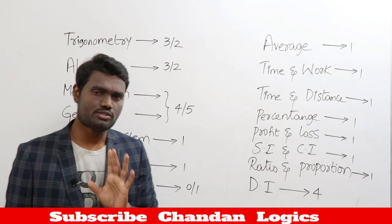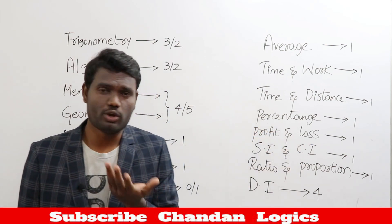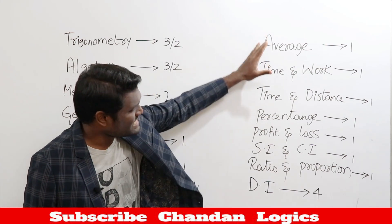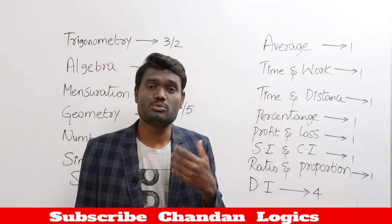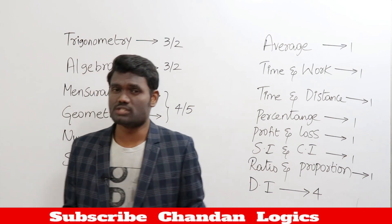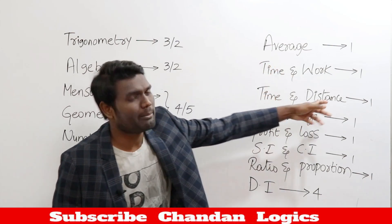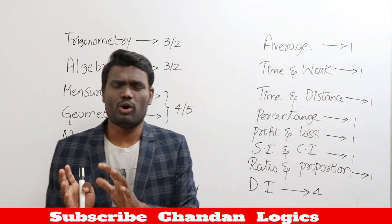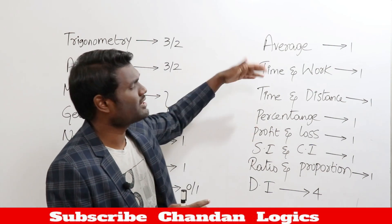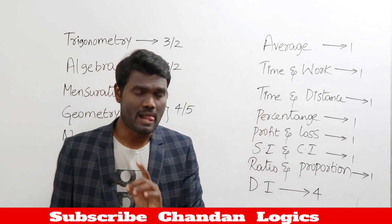From percentage you'll get one question, from profit and loss one question, from simple interest and compound interest one question, and from ratio and proportion one question. Generally it's one question each, though sometimes you get zero from a topic and two from another. All these topics combined together give roughly one mark each, with a maximum of two from any single topic.